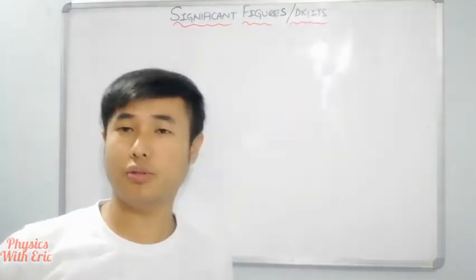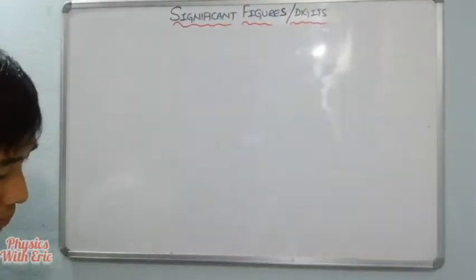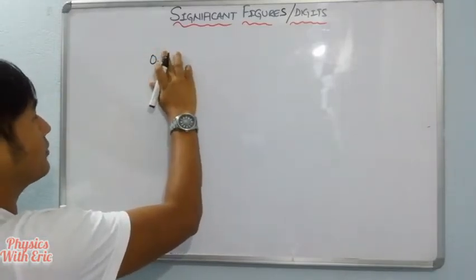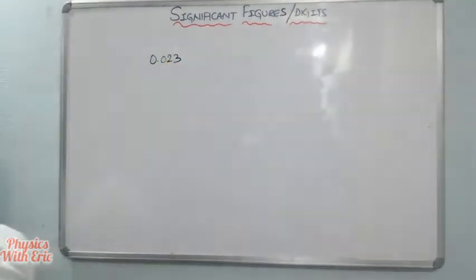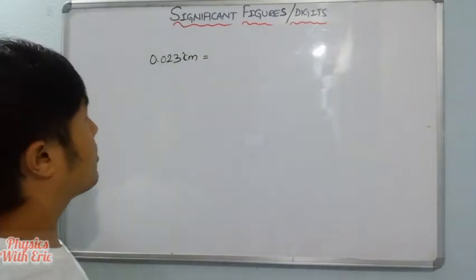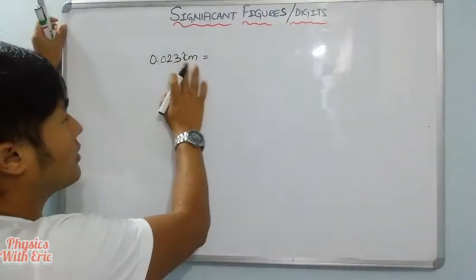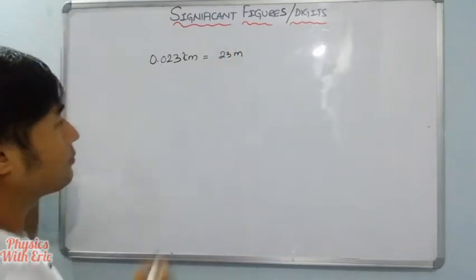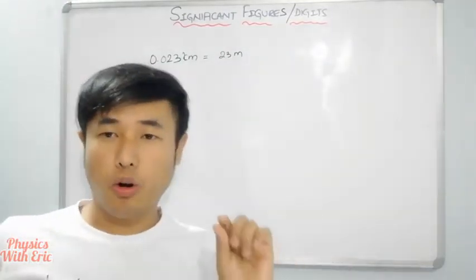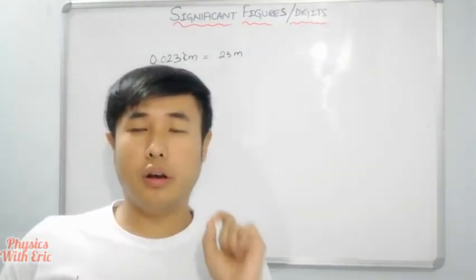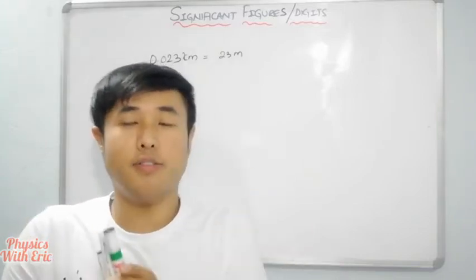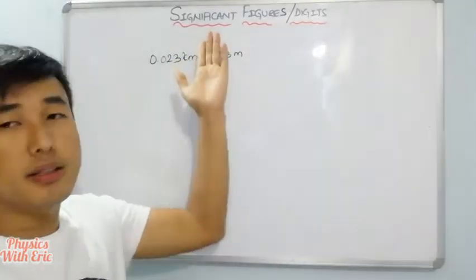Let's look at an example to understand. Suppose the number is 0.20 or 0.023 km. Converting units: 0.023 km equals 23 metres. Now, all non-zero numbers are significant figures.